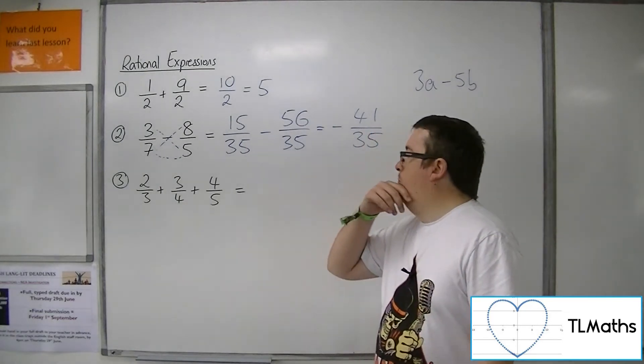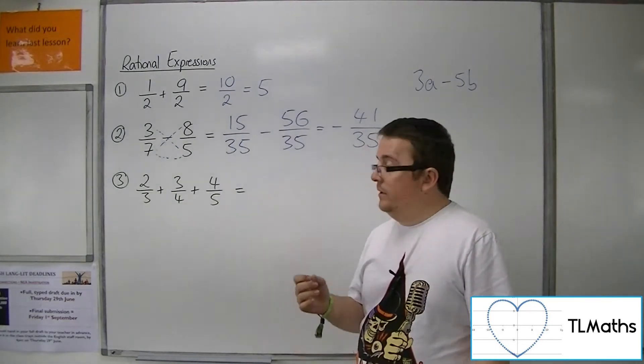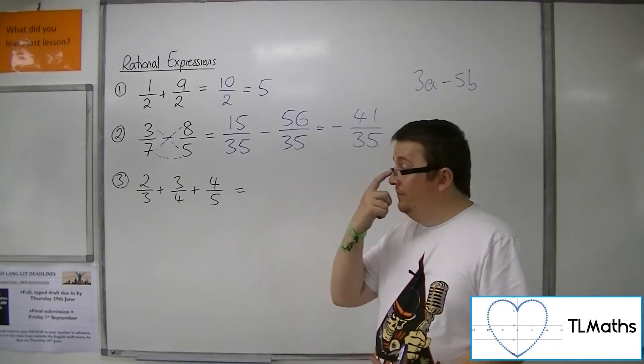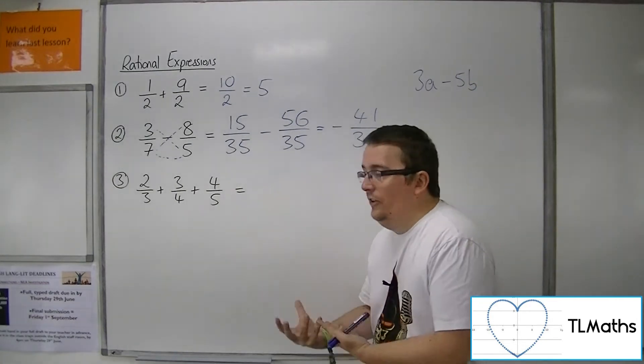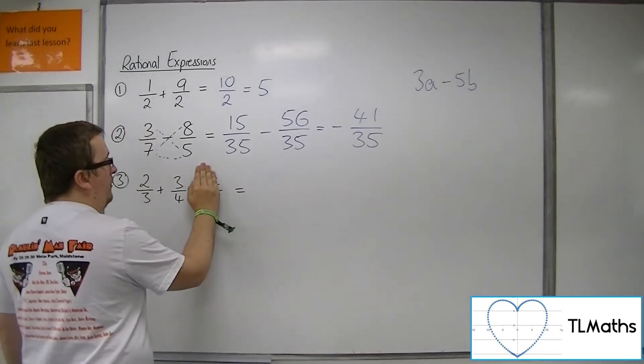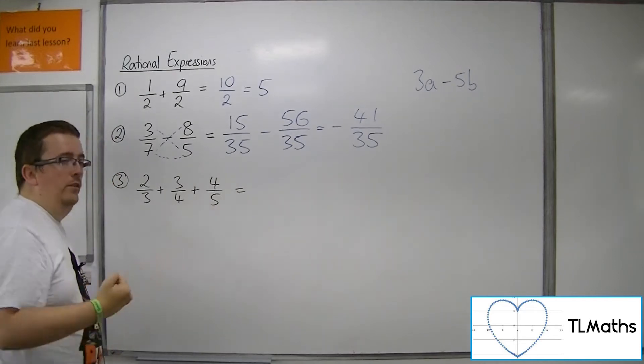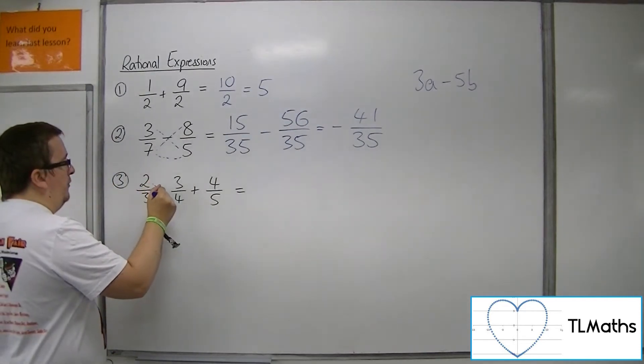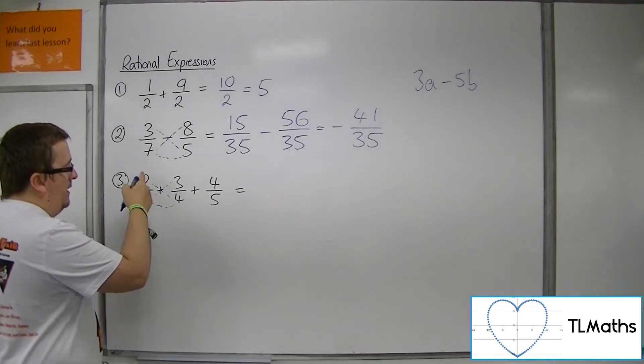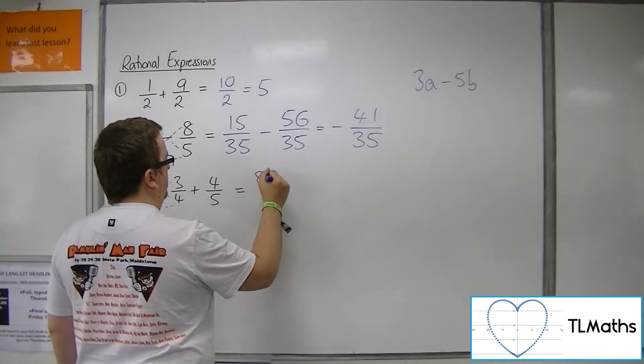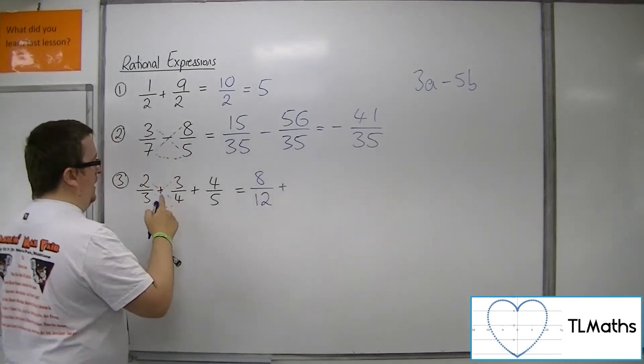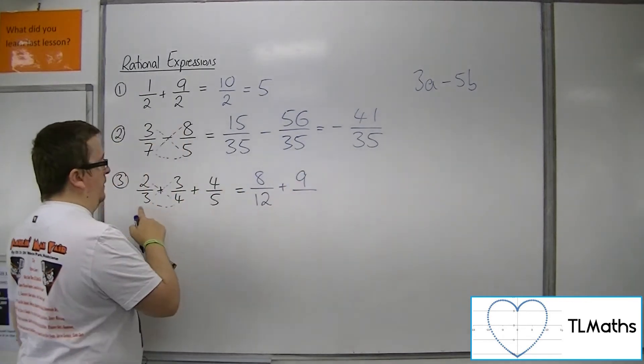Now if I'm given a problem where I've got three fractions to add together, like 2 3rds, 3 quarters, 4 5ths, I want to get this common denominator. And it's probably easier to work with this if you think about combining two of the fractions first and then adding on the third. So if I use cross multiplication on the first two fractions, I get 2 times 4, which is 8, over 3 times 4, so 12, plus 3 times 3, over 3 times 4.